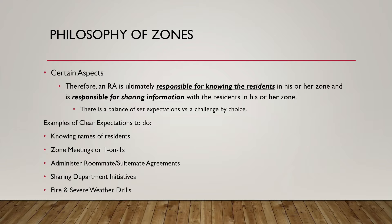Moving on from the philosophies, we're going to hit on the certain aspects — what you are directly responsible for. The RA's ultimate job as far as zones go is that you're responsible for knowing the residents and sharing information to those residents. There's also a balance between set expectations versus challenge by choice. Some clear expectations are: knowing residents by name, holding zone meetings or one-on-ones, administering roommate and suite-mate agreements at the beginning of each semester, sharing department initiatives and information, and being responsible for fire and severe weather drills.